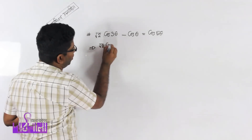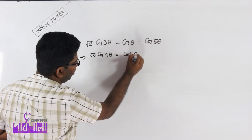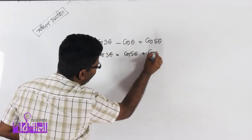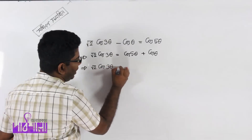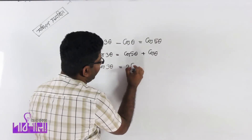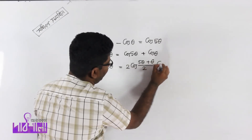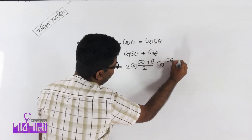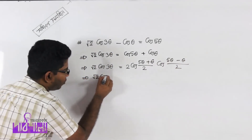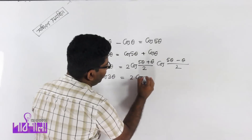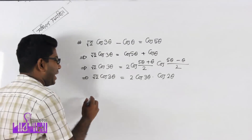Next problem: root 2 cos 3θ plus cos θ plus cos 5θ plus cos θ. Applying the formula cos C plus cos D equals 2 cos((C+D)/2) into cos((C−D)/2). So root 2 cos 3θ equals 2 cos 3θ into cos 2θ.